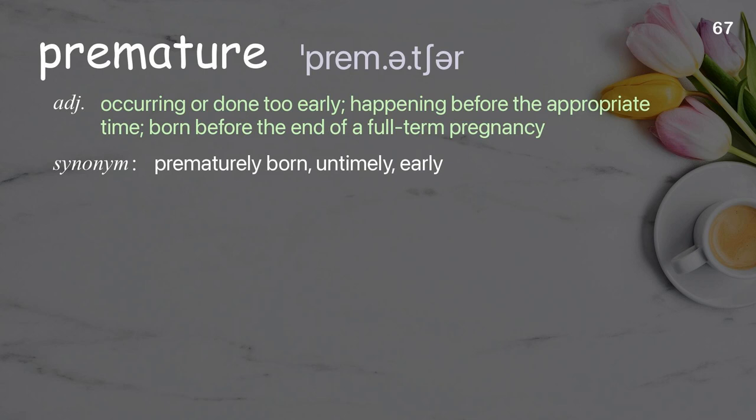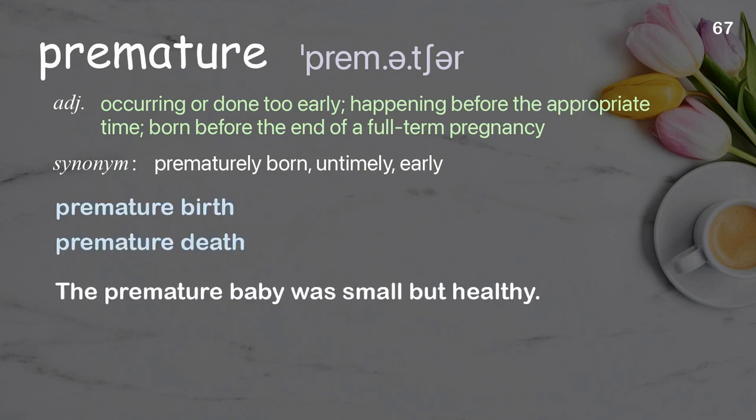Premature: occurring or done too early; happening before the appropriate time; born before the end of a full-term pregnancy. Examples: premature birth, premature death. The premature baby was small but healthy.